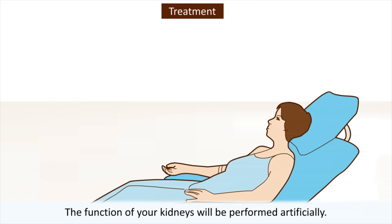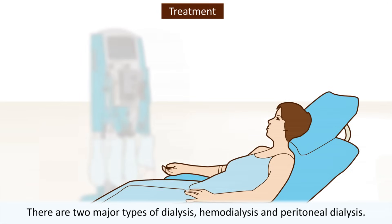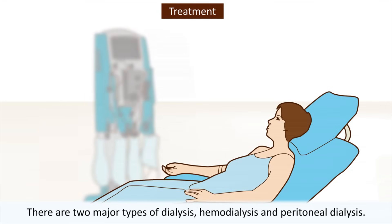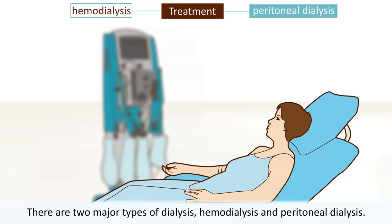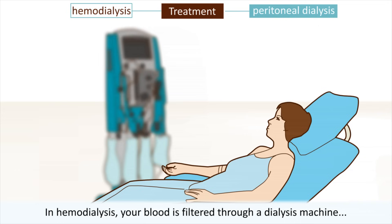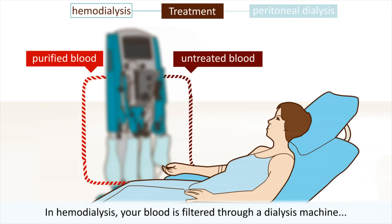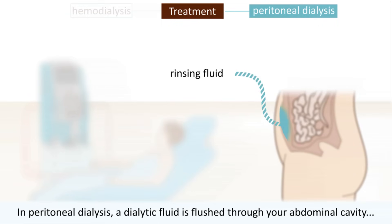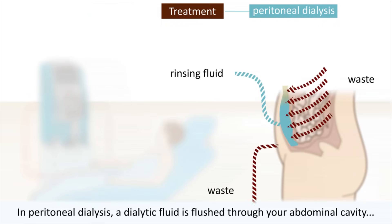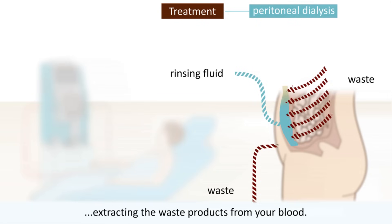There are two major types of dialysis: hemodialysis and peritoneal dialysis. In hemodialysis, your blood is filtered through a dialysis machine outside your body. In peritoneal dialysis, a dialytic fluid is flushed through your abdominal cavity, extracting the waste products from your blood.